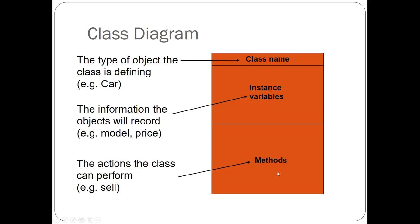You've probably not come across methods before, but those are the actions that the class can perform. As an example, keeping to the car sales example, we can sell a car, drive a car, put petrol in a car, fix it — they're all actions that can be performed on that class. We name those methods in the bottom box.